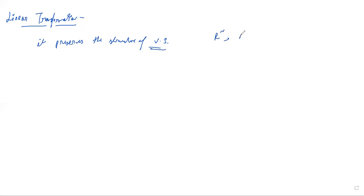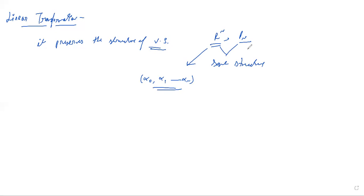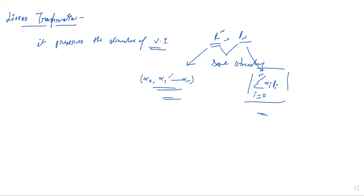Let's say I have two vectors — one is real and the other is polynomial. These are two completely different vector spaces but they have the same structure. The vector from the real space is like (α₀, α₁, ..., αₙ), corresponding to Rⁿ, and the polynomial is represented as the sum from i=0 to n of αᵢ · pᵢ. The coefficients of the polynomials are α₀, α₁ to αₙ — the same as the real vector.